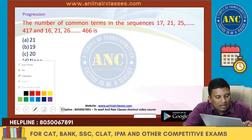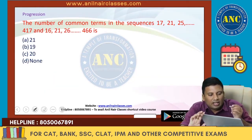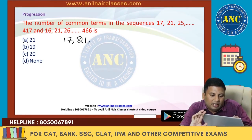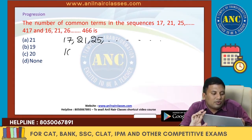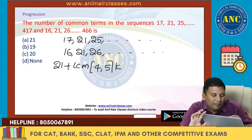If you see here, the higher values are given. I think it is the same series. 17, 21, 25 and so on. Next one: 16, 21, 26 and so on. So, 21 plus LCM of 4 and 5 into K.